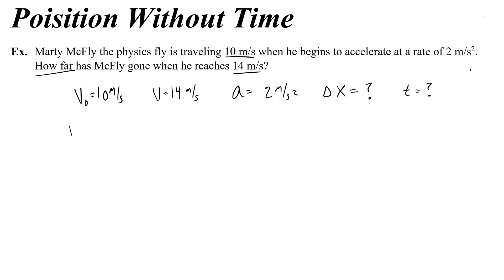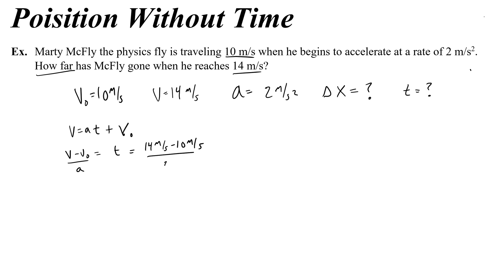To figure out how much time it takes, I'll take the velocity equation and solve for time, which gives v minus v-naught divided by acceleration. So the time is 14 meters a second minus 10, over the acceleration of 2, which gives me 4 over 2, or 2 seconds.